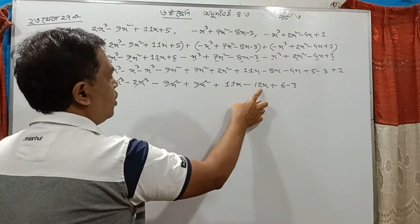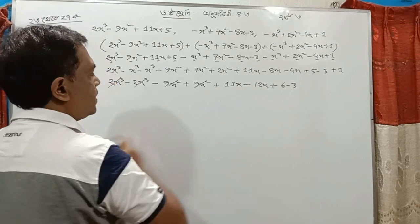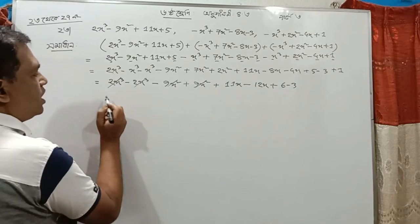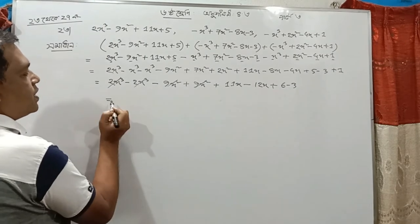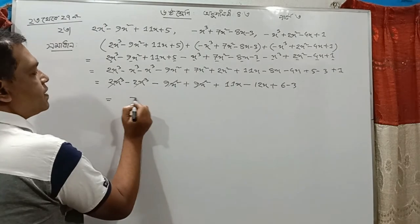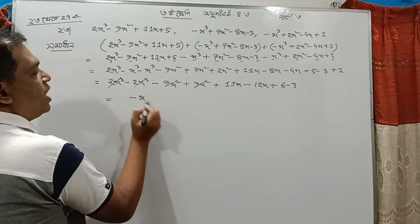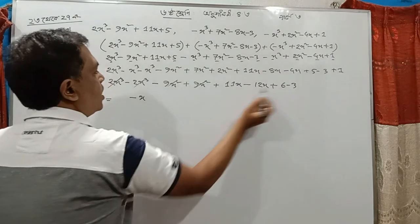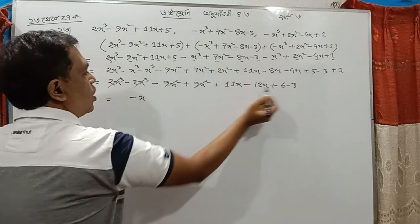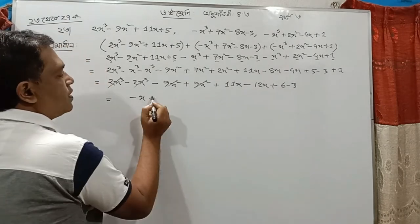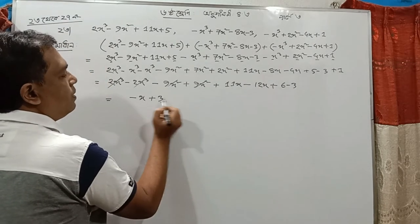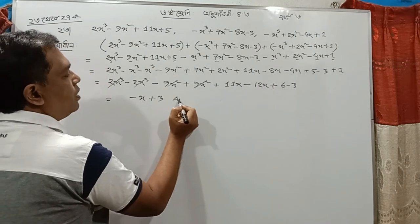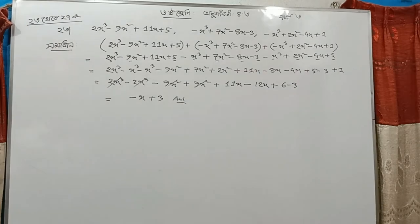If x is equal to 1, then we can write x. So x will be equal to minus. Minus x will be equal to minus x. So 6 will be equal to 3. Plus 3 will be equal to minus x. So this will be equal to 3, and the answer will be equal to 24.